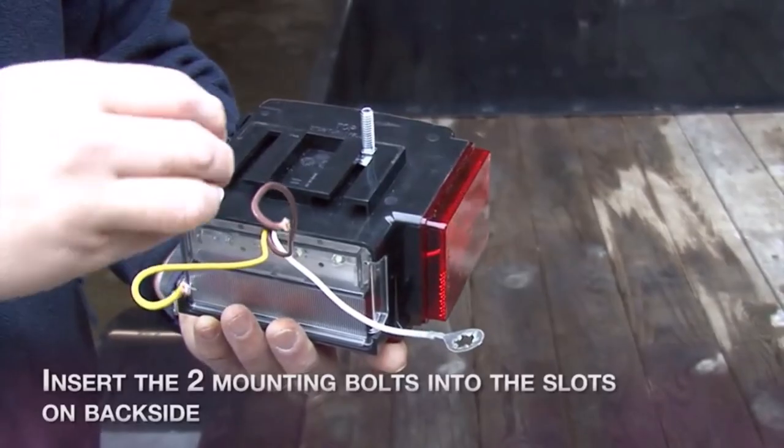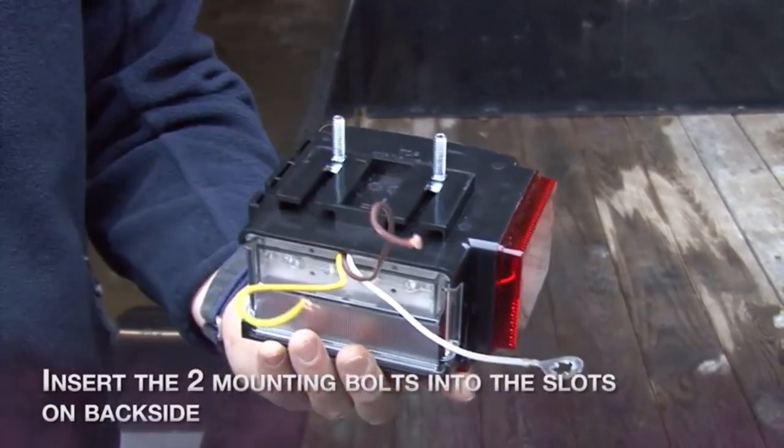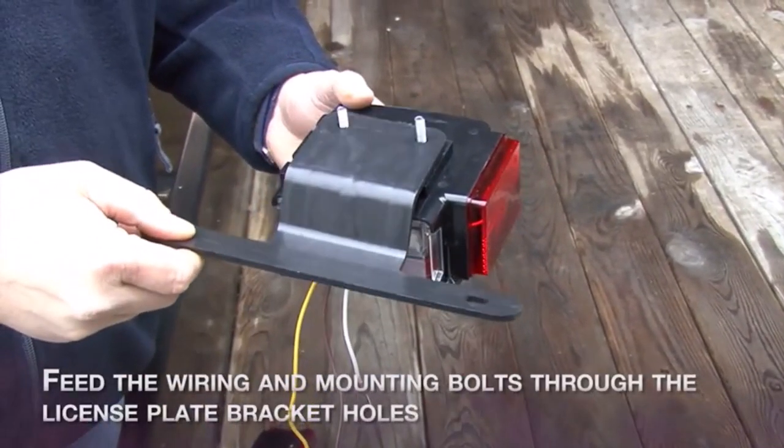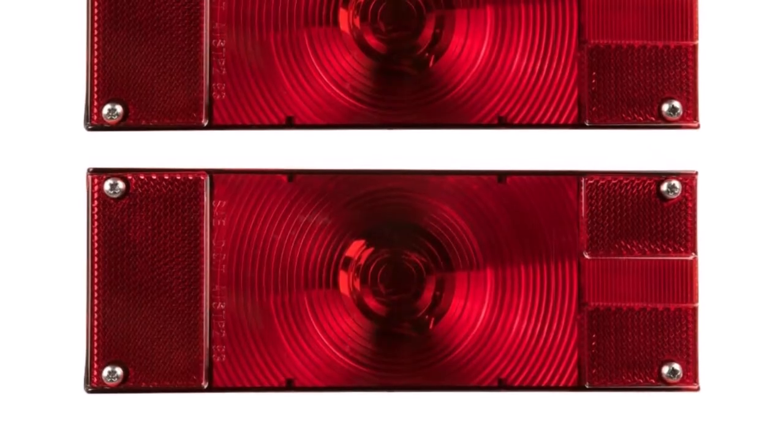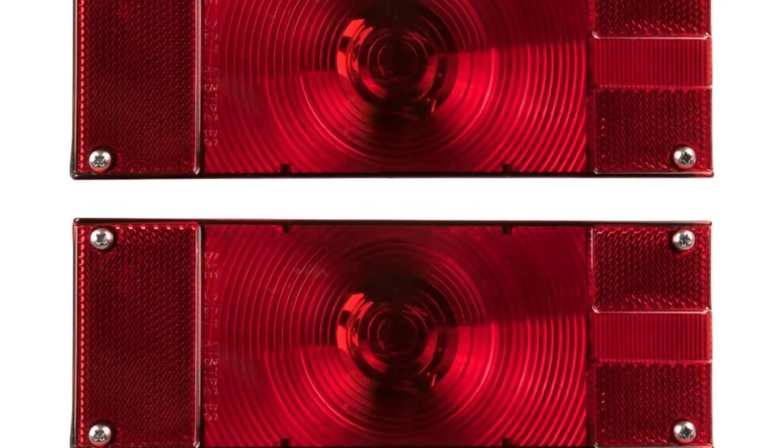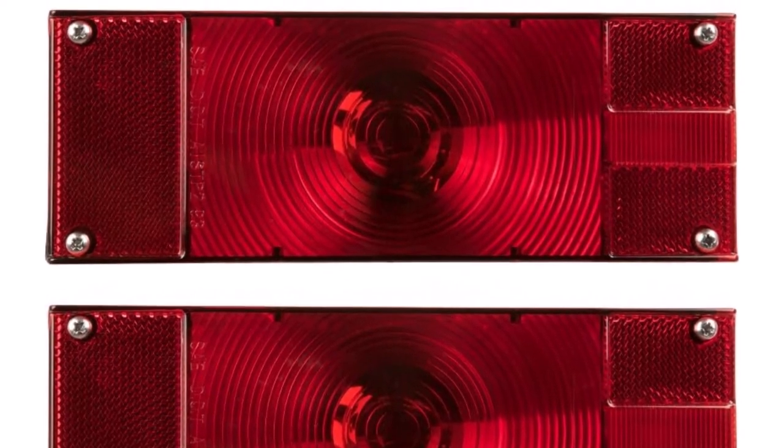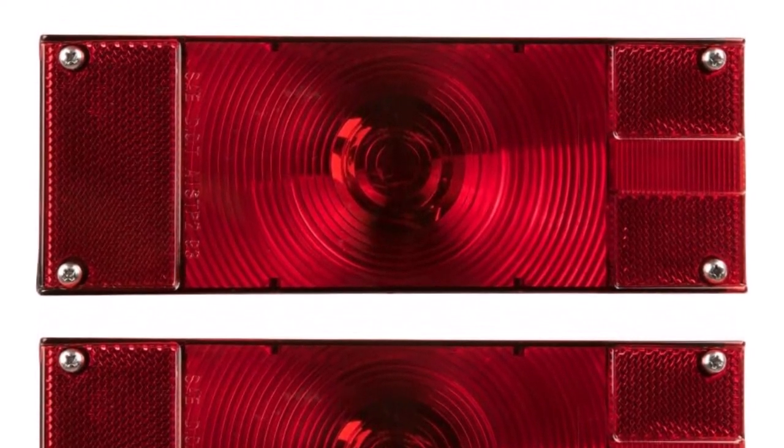What we like about it: The low-profile design looks great when installed. Comes with a 20-foot 4-way wire harness. Easily replaceable incandescent bulb inside. Compatible for mounting on a 2 or 4-inch center. License plate bracket and mounting elements included.